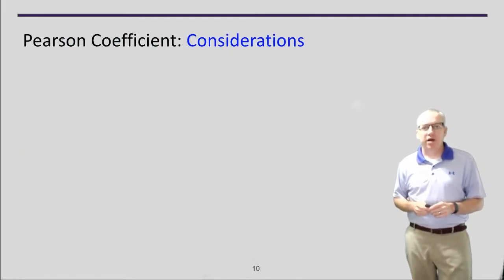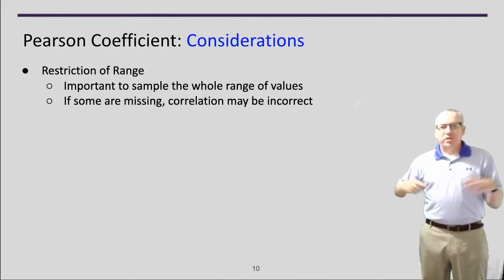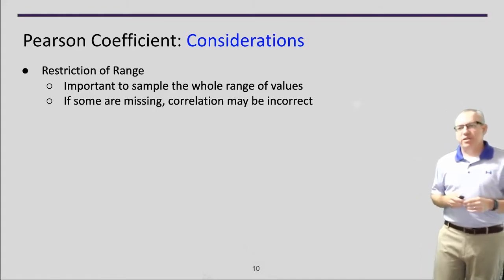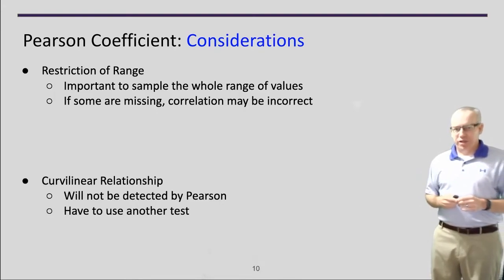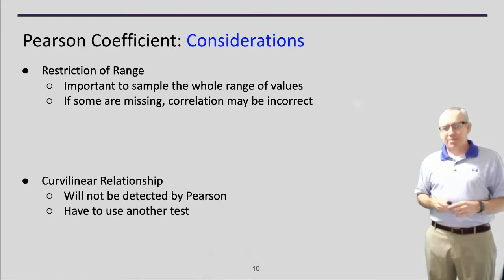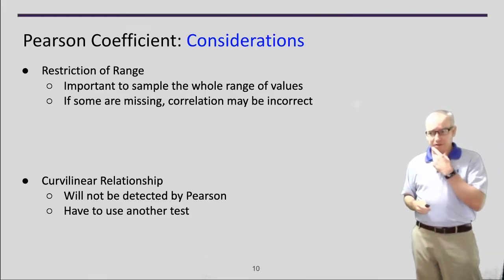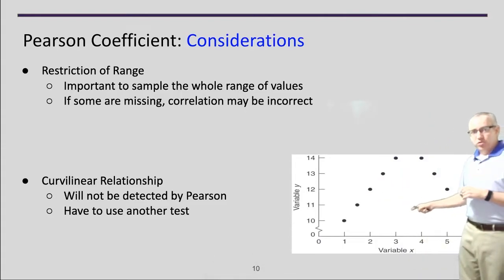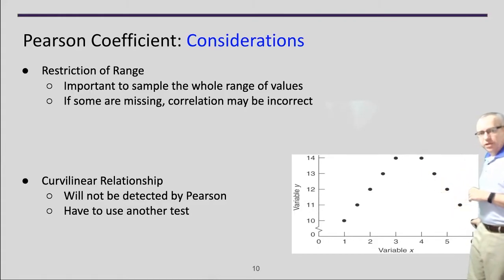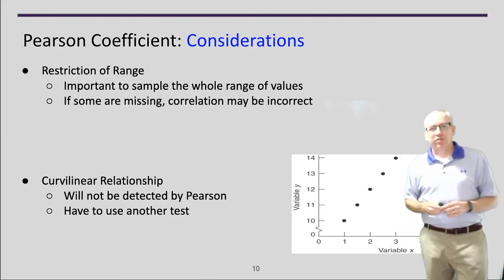Some things to think about with Pearson correlations: it's important that we sample across the whole range of values, because if some things are missing we might have problems with our correlation. We also have to worry about curvilinear relationships. The Pearson test only catches linear relationships. If the data has a curved relationship — where the value increases to some point and then begins decreasing — the Pearson test won't catch that. We have to use another test.